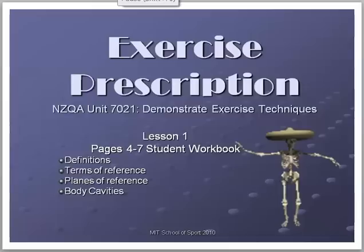Okay, year 13, 13 PSL, how are we doing? I thought I'd do this quick little podcast so you can catch up with some notes that you might have missed out on or didn't understand in my fantastic lesson the other day. So here we are, exercise prescription. This is US 7021. You can hopefully gain 8 credits if you're successful in this unit. 8 credits, absolute bargain.